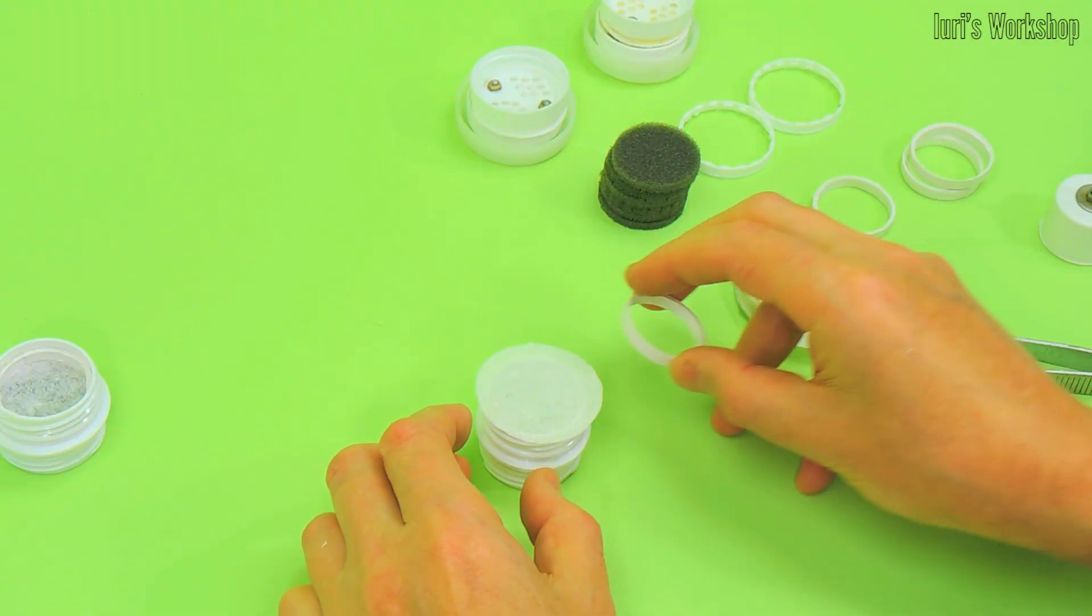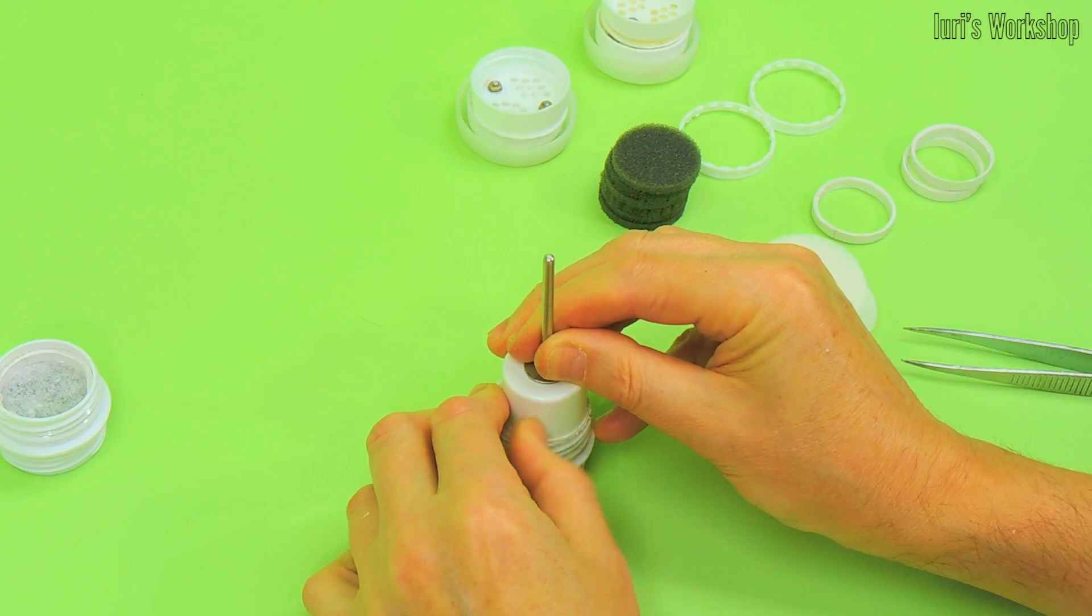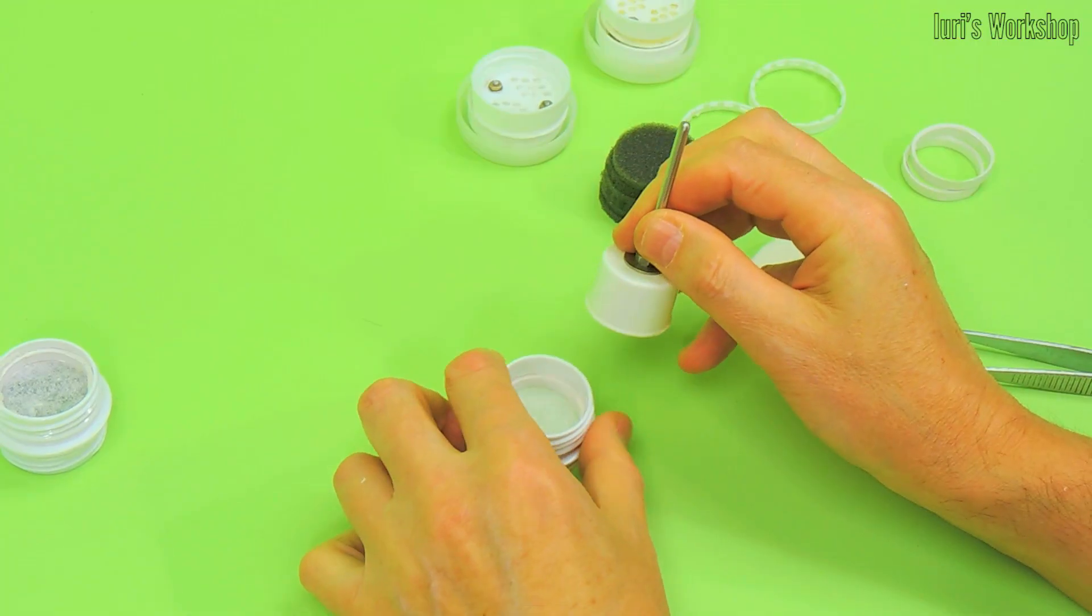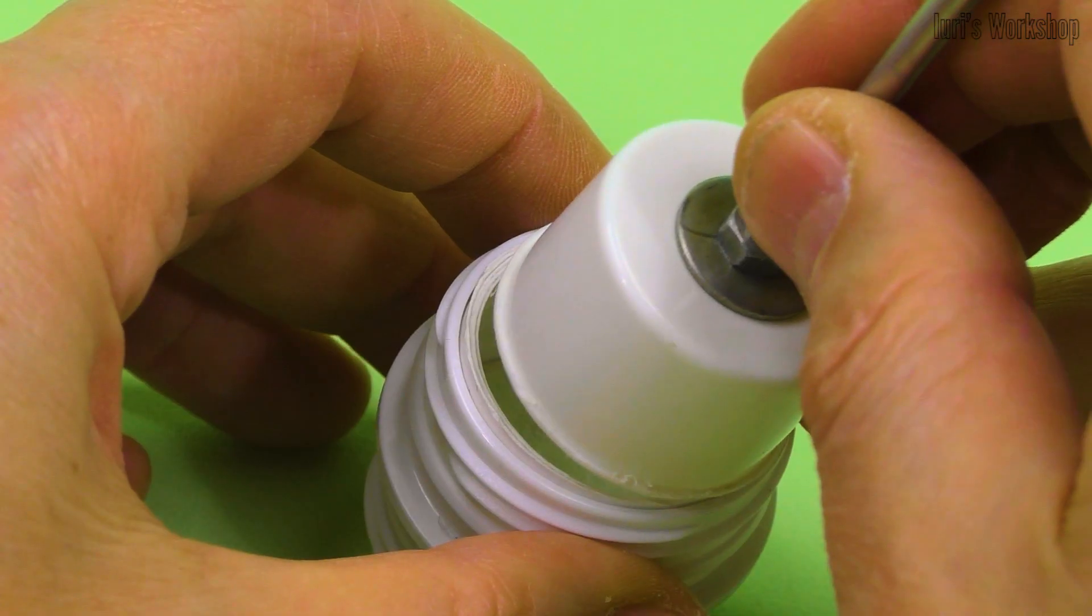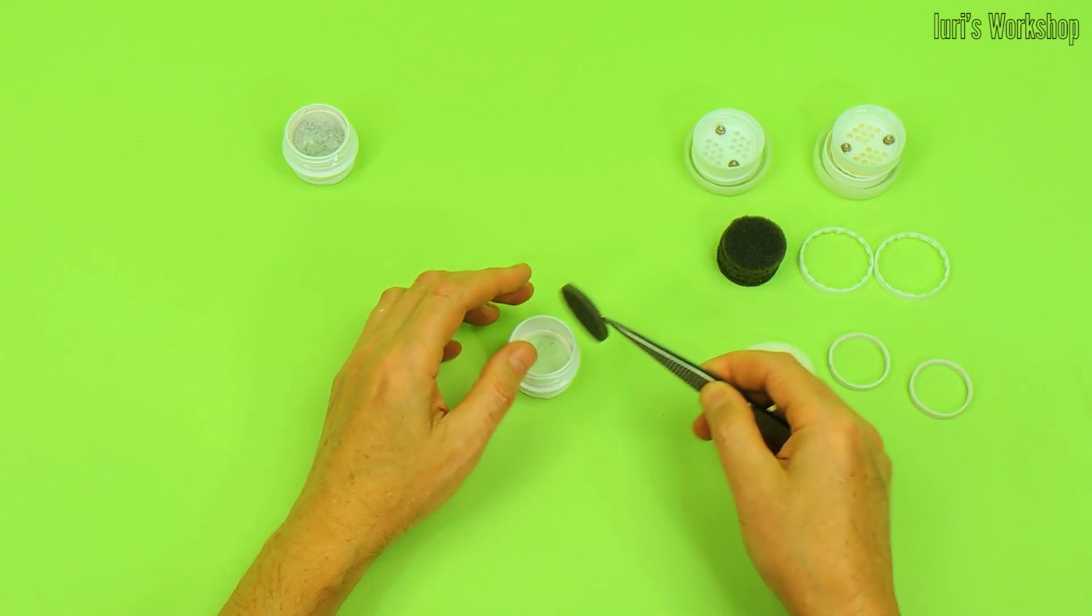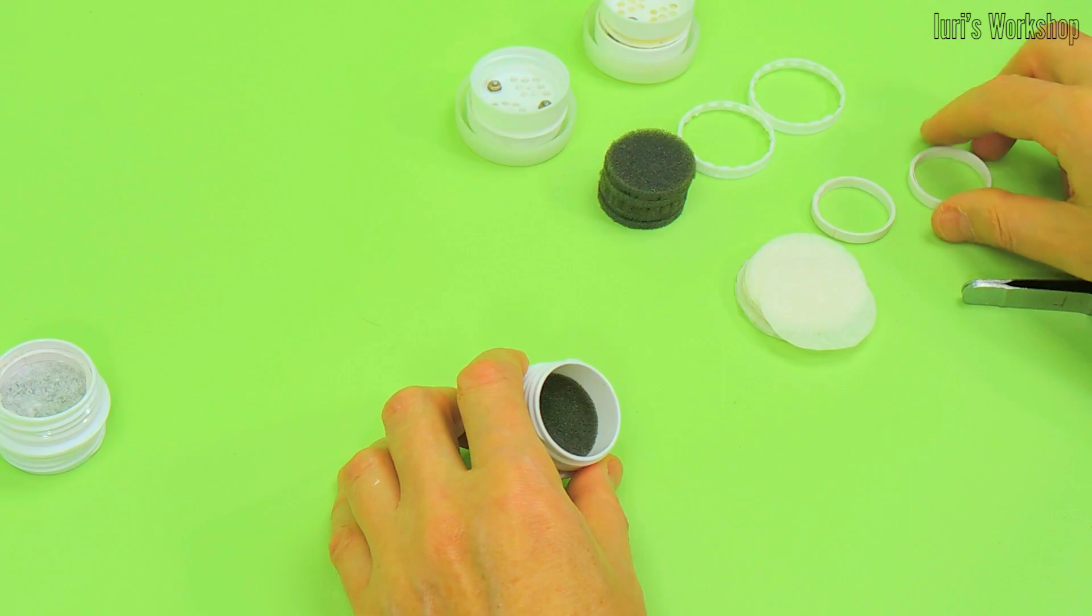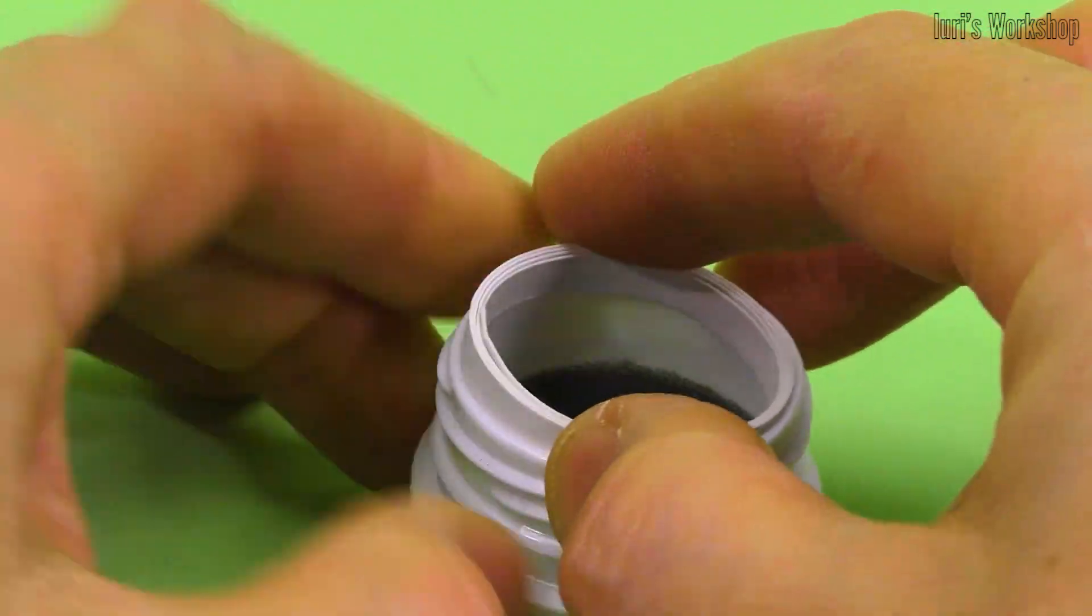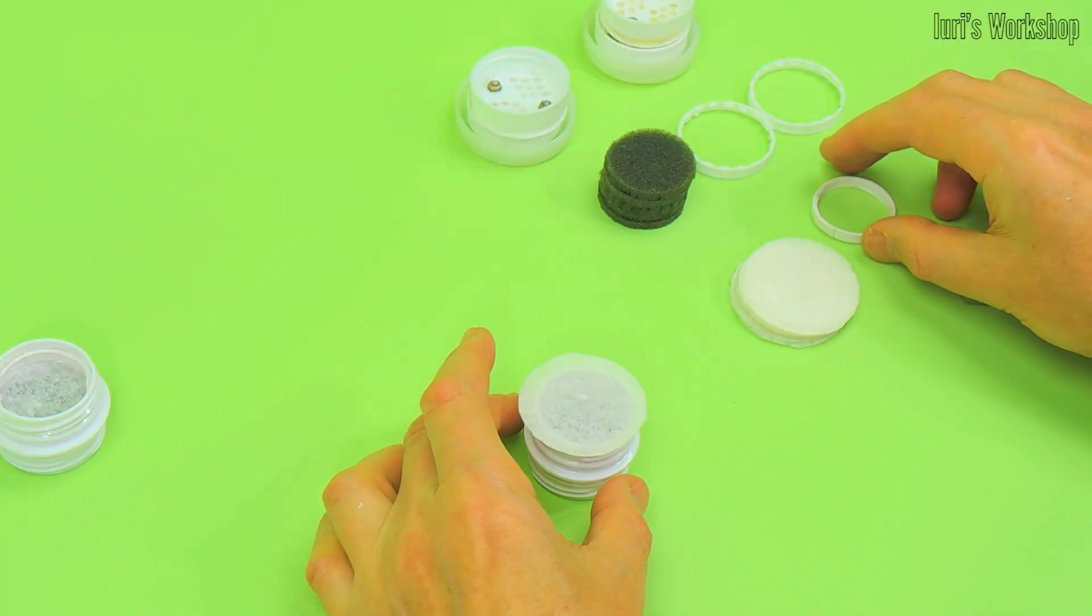Let's proceed to the final assembly of the cartridges. We fix the first HEPA filter with a paper ring. This design of the cartridge makes it easy to change filters and disinfect. With the help of two more of the same rings, we fix the foam filter. And in the end we can install another HEPA filter.